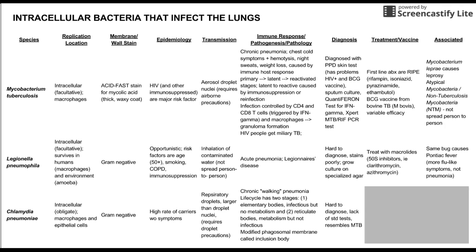Chlamydia is also hard to diagnose — there is a lack of standardized tests and it slightly resembles tuberculosis. Chlamydia is treated with doxycycline, which is a tetracycline and a 30S protein inhibitor. This antibiotic is specifically effective because doxycycline accumulates inside host cells, and chlamydia is an obligate intracellular bacteria.